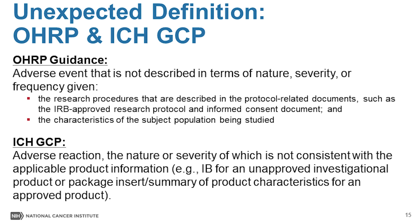Here are the definitions for OHRP and ICH GCP for an unexpected adverse event. OHRP guidance defines an AE that's not described in terms of nature, severity, or frequency. In the GCP definition, it's an adverse reaction whose nature or severity is not consistent with what is already known about the product, such as what's found in the investigator brochure or a package insert.